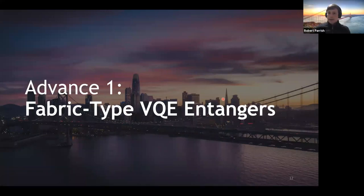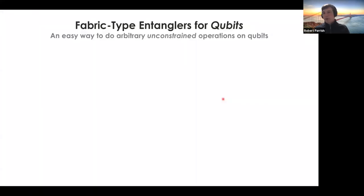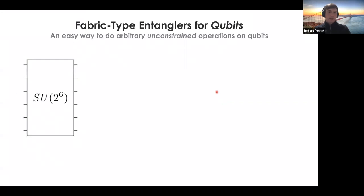Our first advance, just posted to the archive, is about designing a good VQE entangler circuit for modeling electrons in molecules. There's an old result — how to do this when you have no constraints. If you have six qubits and want to perform an arbitrary rotation called an SU gate on those six qubits, you can't use a six-qubit gate directly, since gates are usually one or two qubits. So how do we build a six-qubit operator out of simpler elements?